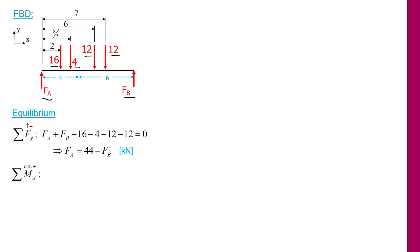Now we can do sum of the moments, and I will pick point A as my reference point. And if I do that, the force at A passes through that point, so it has no moment arm, whereas the force at B will create a moment arm of 4 plus 6. And when I cross that with FB, I'm going to get a counterclockwise moment. So I will get FB times 10, and that is positive because I've used counterclockwise as my positive reference.